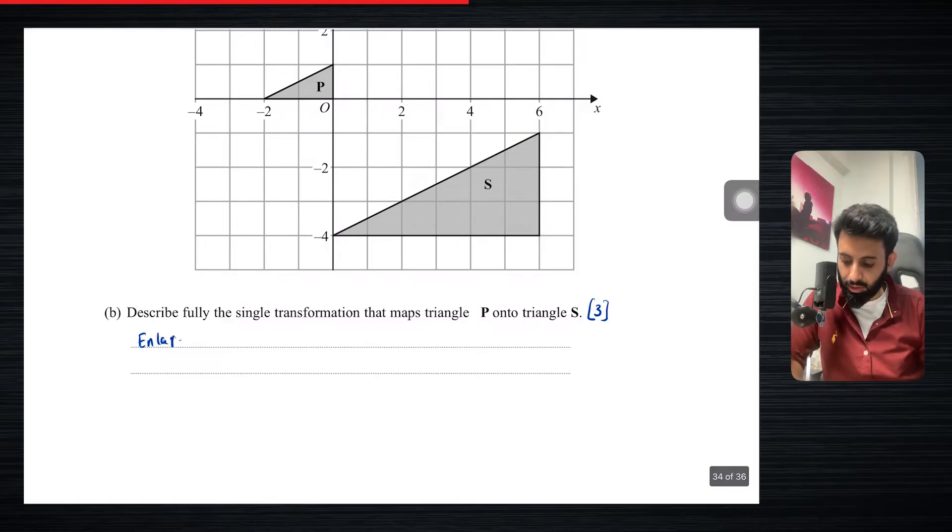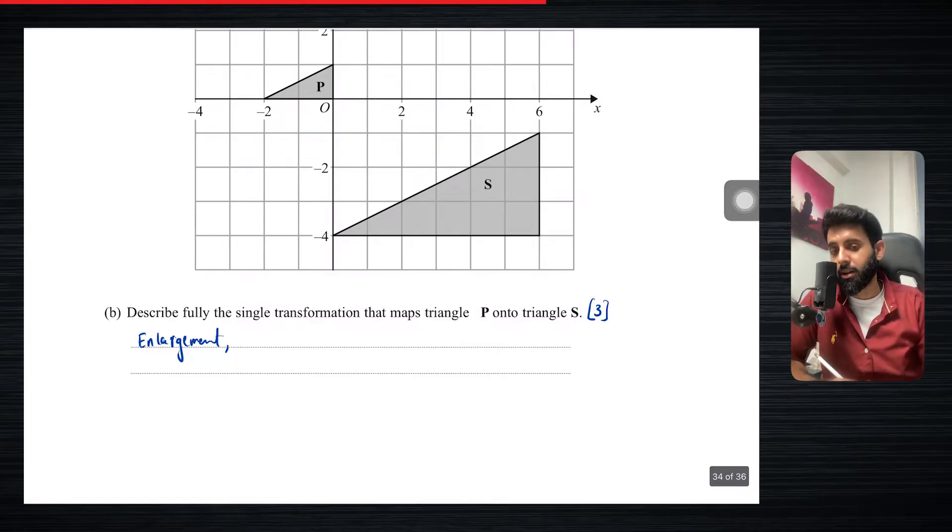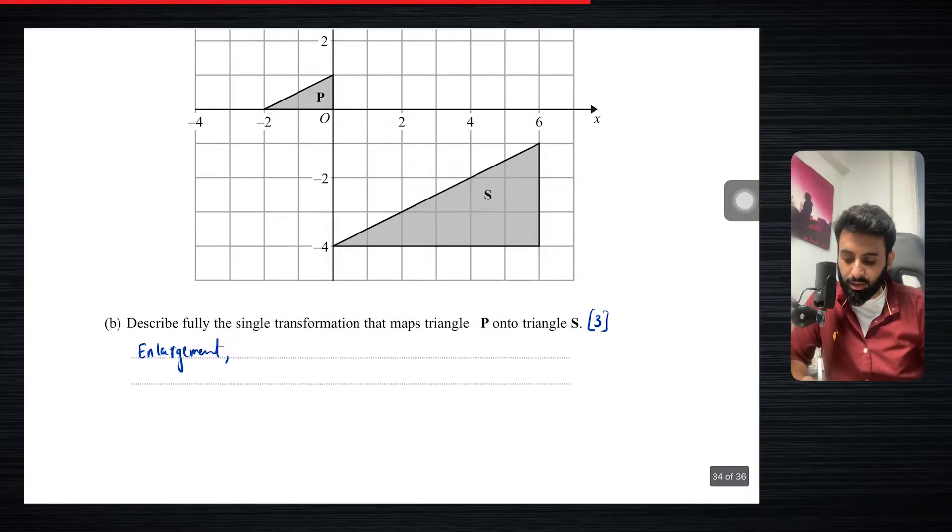So when you write that, that gets you one mark. But as soon as you write enlargement, now you got to write whatever enlargement is defined by. An enlargement, as we know, is defined by two things: one is the center, and the other is the scale factor.